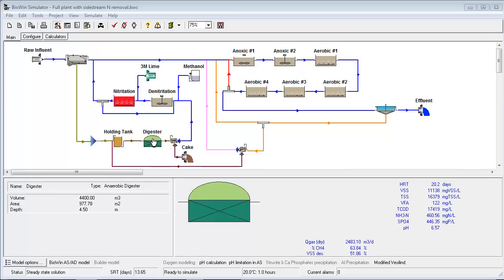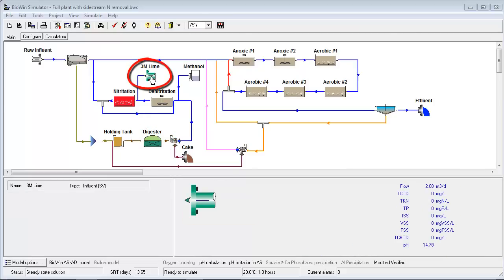We have chemical models which allow us to look at the addition of chemical streams such as caustic and methanol.